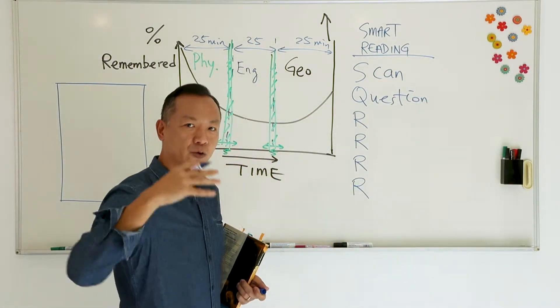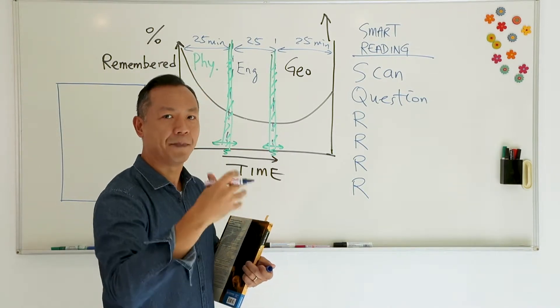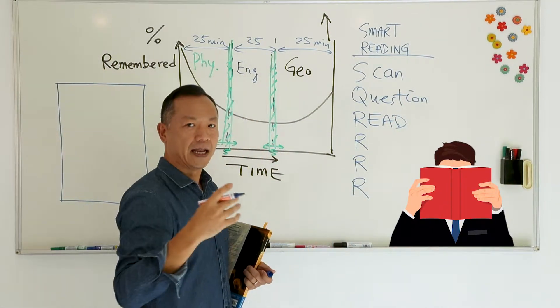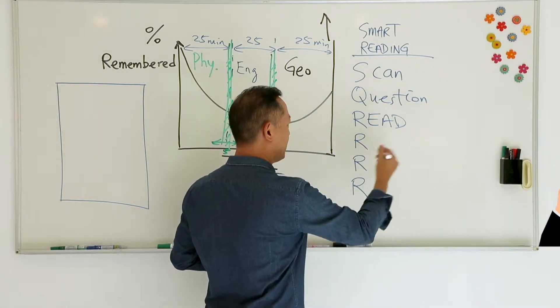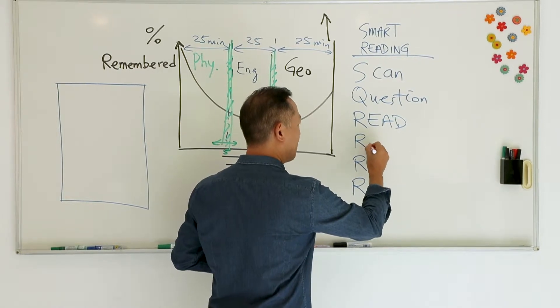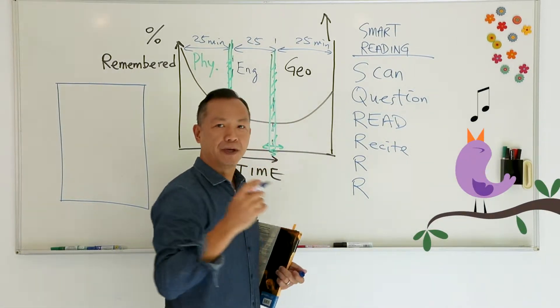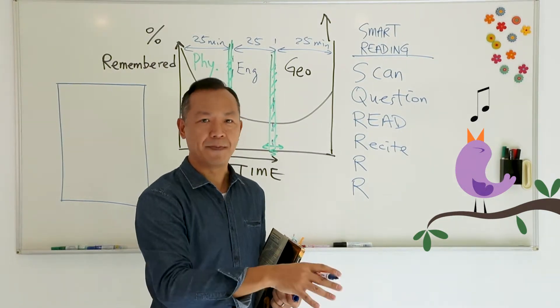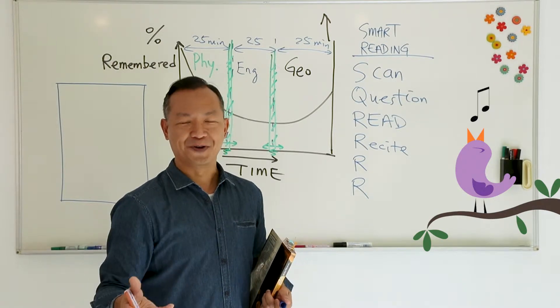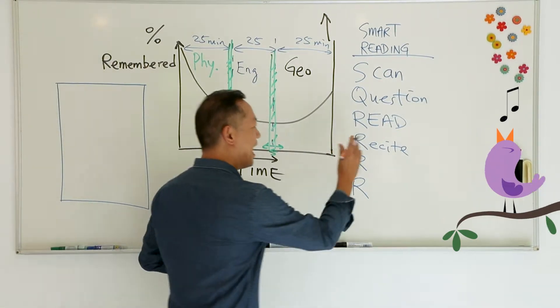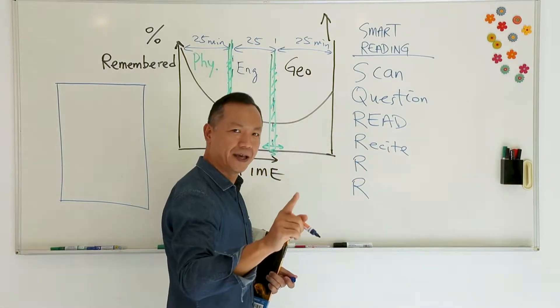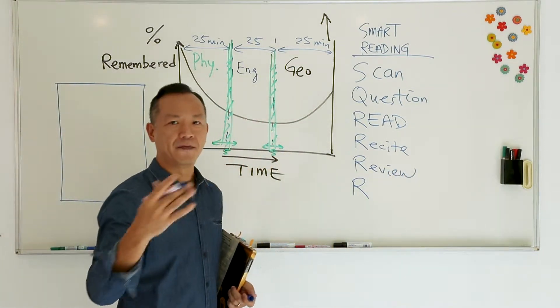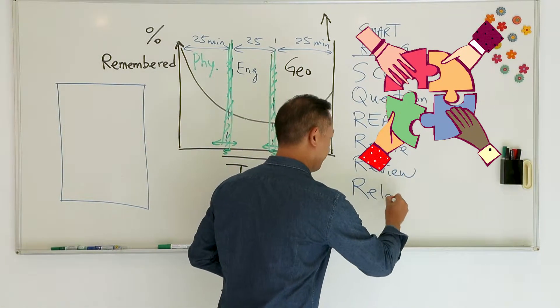As we peel this onion layer by layer, the third step is read. After you have read, you want to recite. When you recite, you want to recite out loud if possible. Of course, if you are in the library or on public transport, you are not going to do that. After you have recited, did you miss anything? If you have, go ahead and go back to the chapter to review. And the last step, relate.